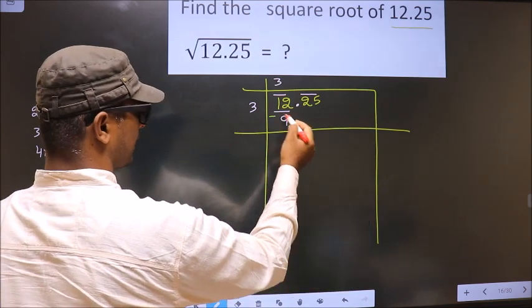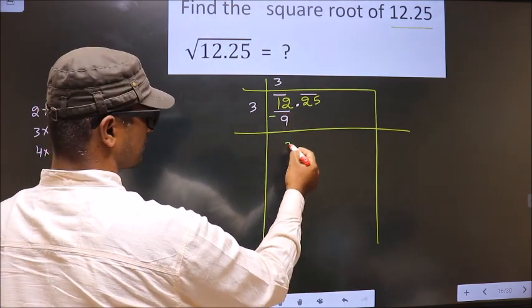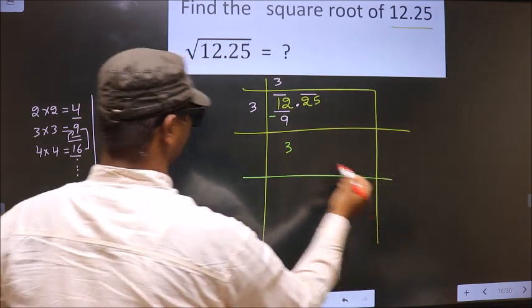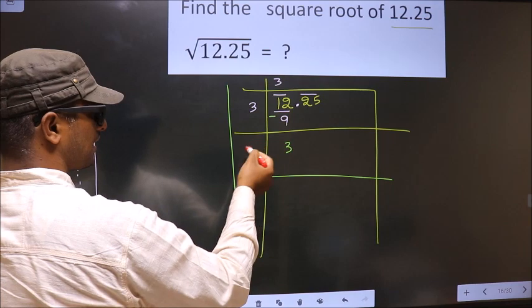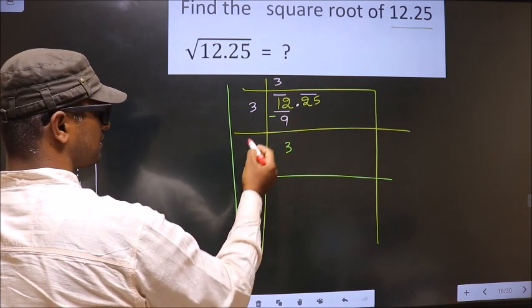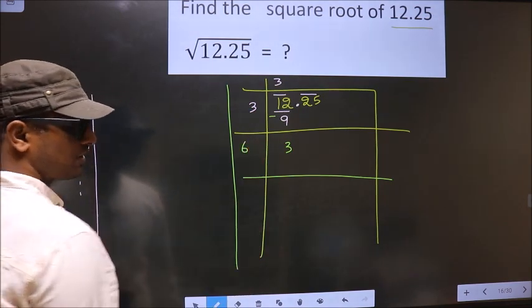Now you subtract. 12 minus 9 is 3. Here we should add these two numbers and write here. So 3 plus 3, 6.